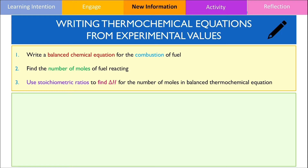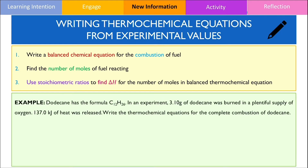Let's look at an example. 3.1 grams of dodecane was burned in a plentiful supply of oxygen. 137 kilojoules of heat energy was released from this process, and we want to write down the thermochemical equation for the complete combustion of dodecane. With all carbon-based compounds, combustion results in the formation of carbon dioxide gas and liquid water at standard laboratory conditions.